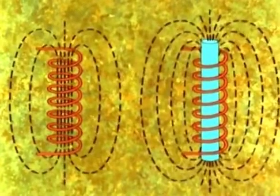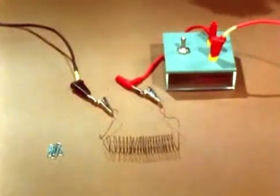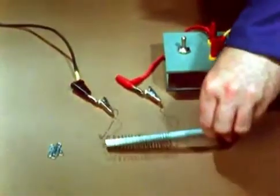And finally, adding an iron core to the coil concentrates the lines of force into a stronger field, and we now have the device known as an electromagnet.